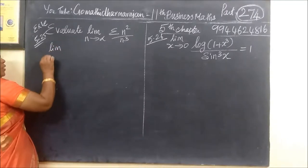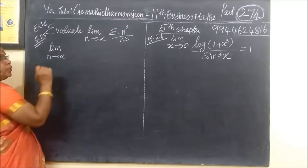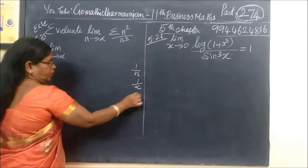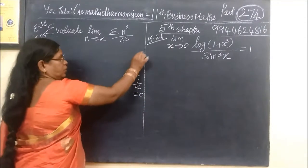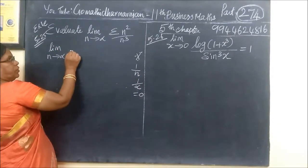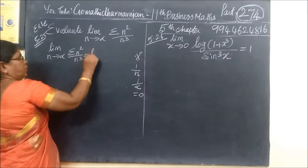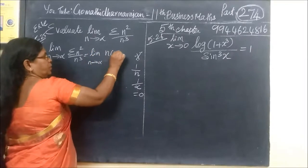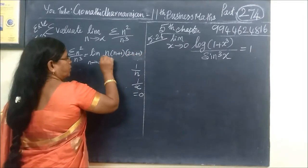It is interesting to know that limit n tends to infinity — this is infinity. We will apply the formula: sigma n squared by n cubed equals limit n tends to infinity of n times n plus 1 times 2n plus 1 by 6.